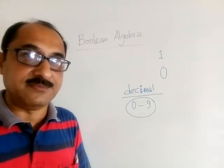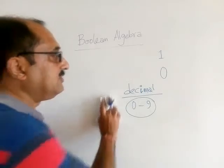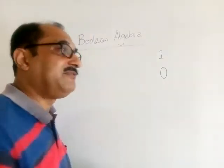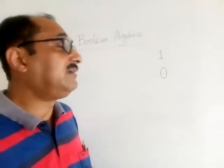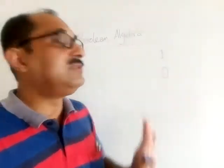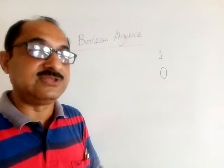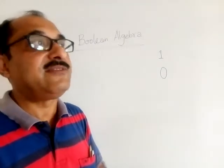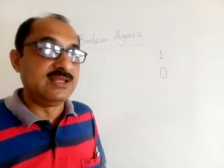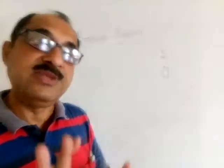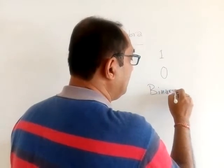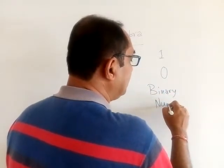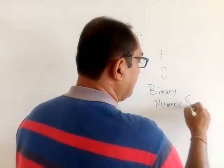But what happens? I told you just now, to explain various phenomenon with current electricity and machine behavior, we need only two things: one and zero. So that is why scientists have thought another numeric system where only these two digits should be used. What is that numeric system called? Binary numeric system.